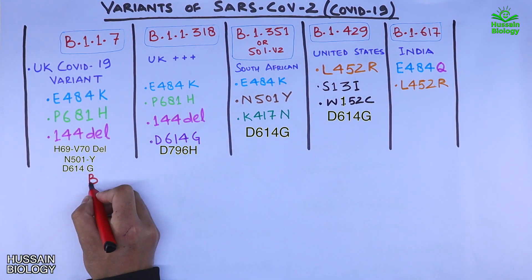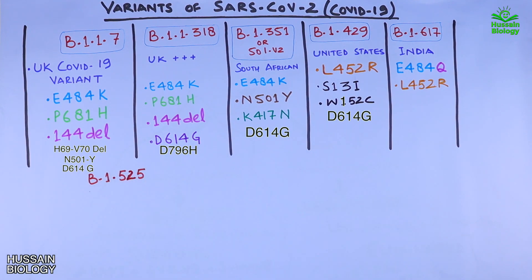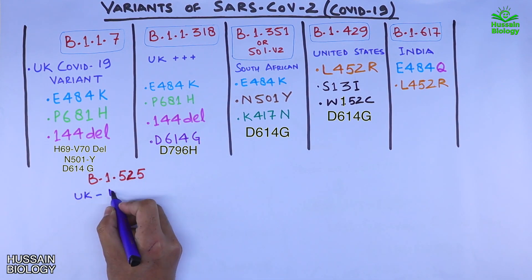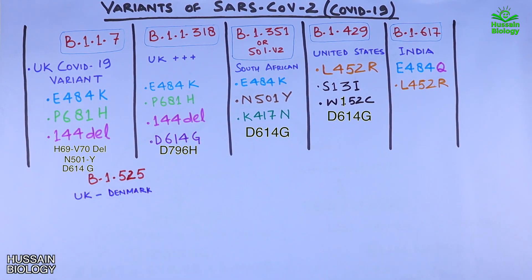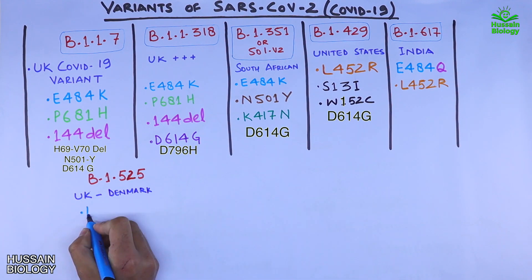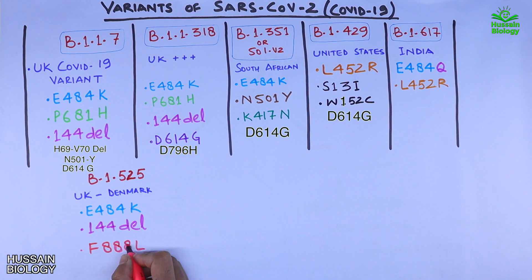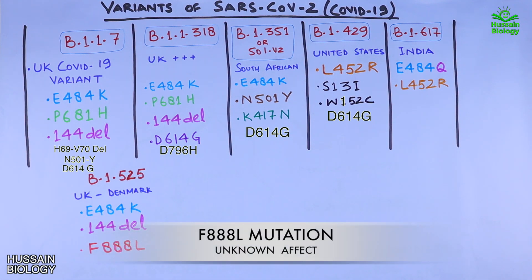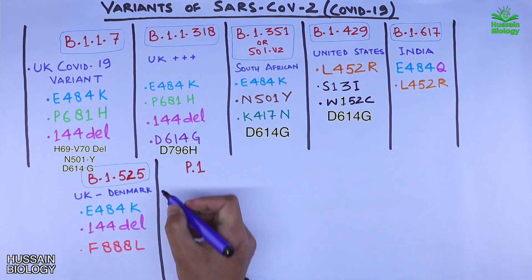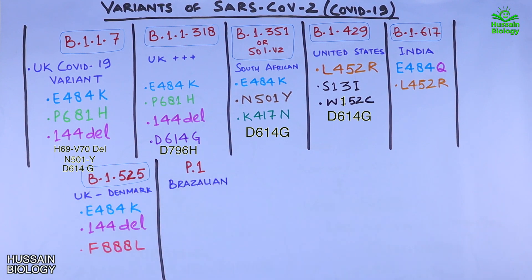The B.1.525 variant predominates in the UK. It has three important mutations including E484K and F888L. The last important variant of concern is P.1, also known as the Brazilian variant.